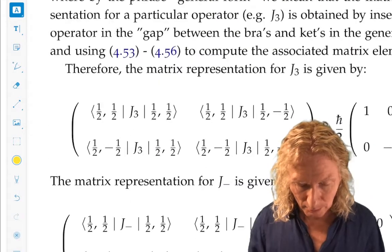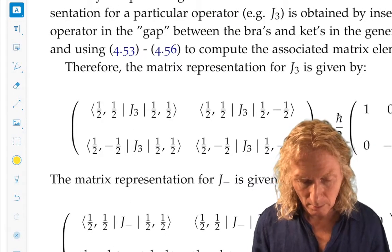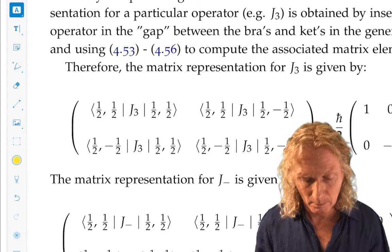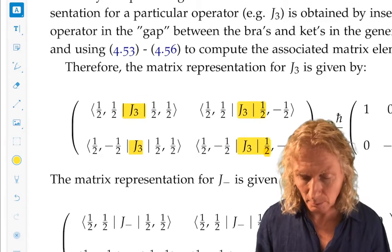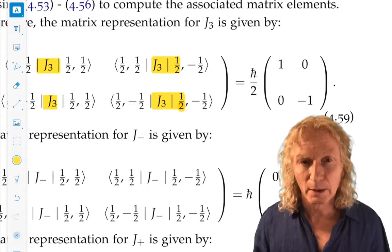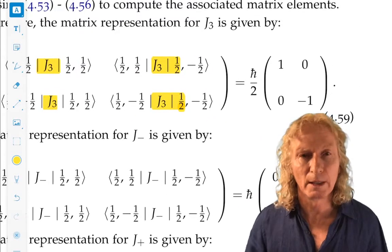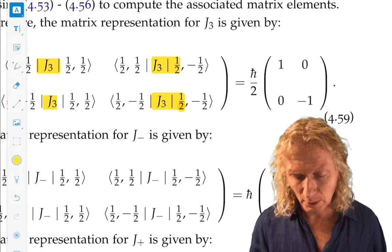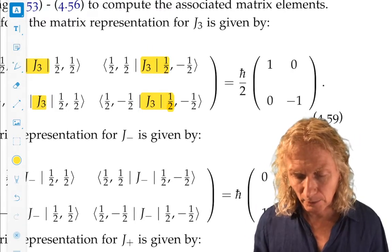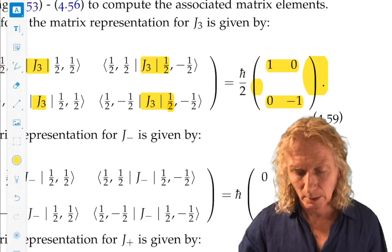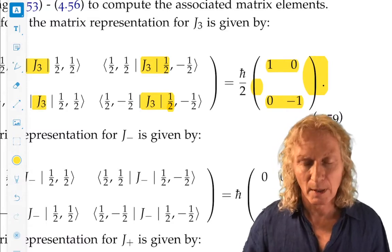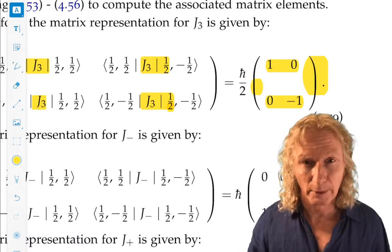Okay, let's compute the matrix representation of j3 in this basis. We just put in j3 in the middle in my template. Do the calculation. Use the four identities that I've already given you. And this is the matrix that we get. Diagonal with one minus one down the diagonal. Clearly self-adjoint.